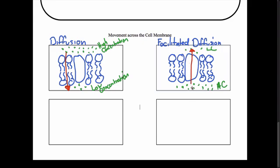Facilitated diffusion is very similar to simple diffusion. The only difference is these molecules have to go through a protein in order to cross the cell membrane.